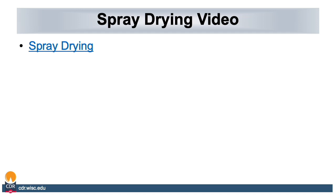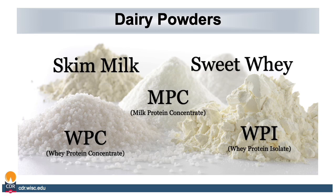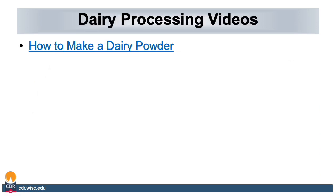To view a spray drying process you can go to the equipment video section of this short course. We can use the processes discussed previously to create an array of dairy powders. Skim milk powder can be created with a combination of separation, evaporation, and spray drying. Sweet whey powder can be created with ultrafiltration, evaporation, and spray drying. MPC (milk protein concentrate), WPC (whey protein concentrate), and WPI (whey protein isolate) can be created with filtration, diafiltration — which is adding water to flush out lactose — evaporation, and spray drying. All of these powders are very common in the dairy industry.